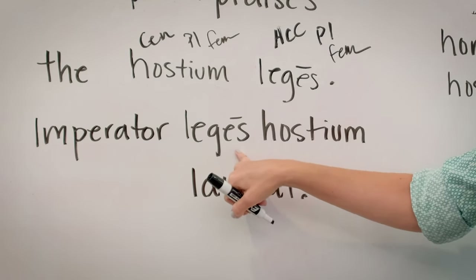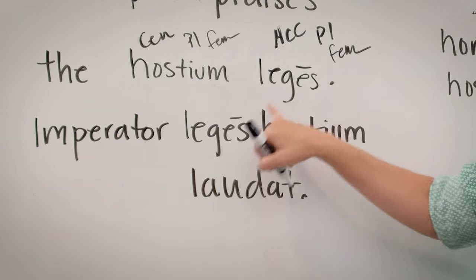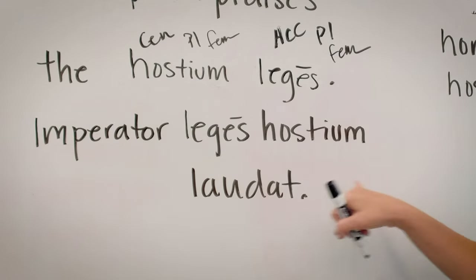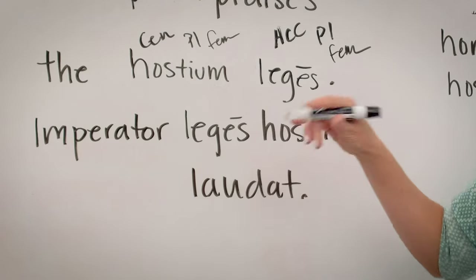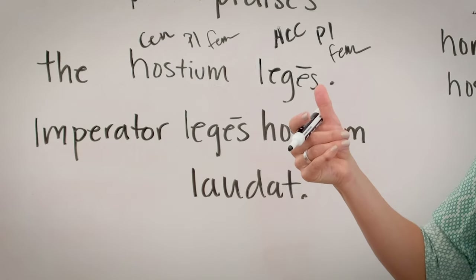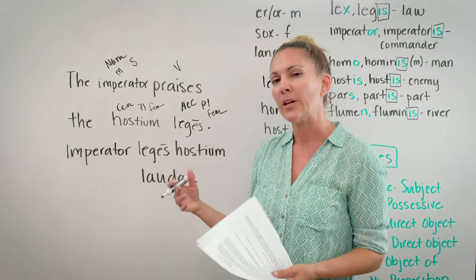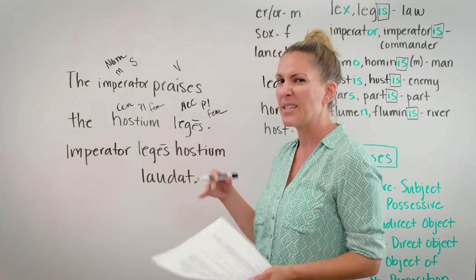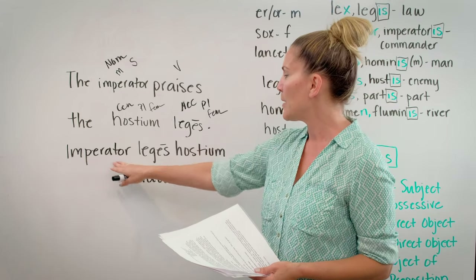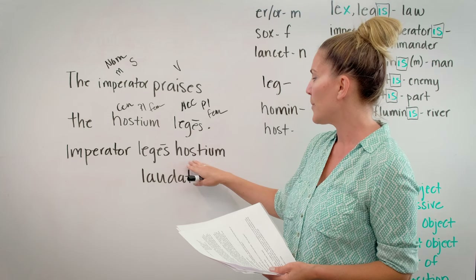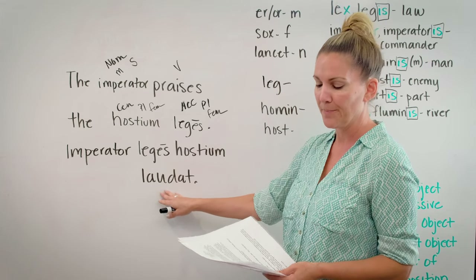So in this case, the direct object comes before the possessive, and you usually see it that way — the possessive comes after the thing it's possessing. That's different from English; we usually wouldn't say 'the books of Mary,' we'd say 'Mary's books.' They tend to do it the opposite way in Latin. So the order is: subject, direct object, possessive, verb.